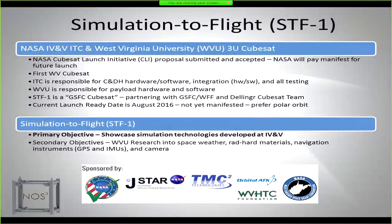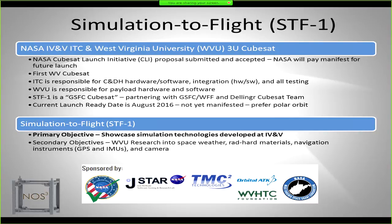We have a CubeSat mission called Simulation to Flight 1, STF-1. It is a collaboration between NASA IV&V and West Virginia University in Morgantown, West Virginia. This is going to be a 3U CubeSat. About a year ago we submitted a proposal to the NASA CubeSat Launch Initiative and were accepted — NASA will fund the manifest and launch of our CubeSat. It will be the first West Virginia CubeSat. ITC is responsible for the C&DH side, including hardware and software integration and all testing, while West Virginia University is responsible for the payload hardware and software — they do the science, we do the C&DH.